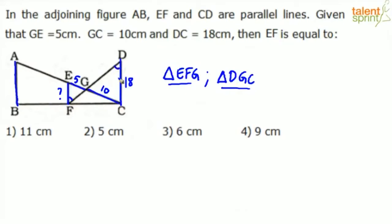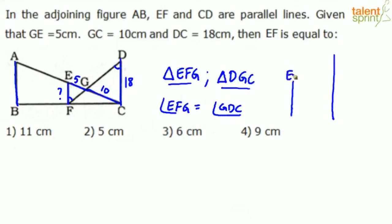Angle EFG will be equal to angle GDC because these are alternate angles. If we take EF and DC as two parallel lines and FD as a transversal, we know that alternate angles are equal when parallel lines are cut by a transversal. So angles EFD and FDC are equal.